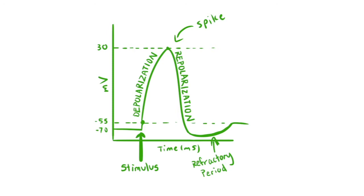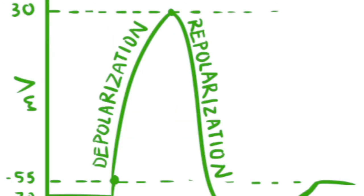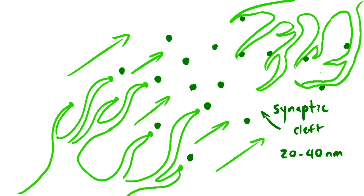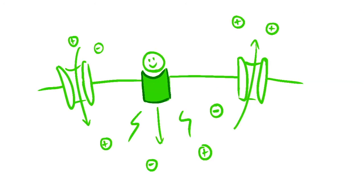Action potentials are also called spikes, for obvious reasons. An action potential triggers the release of neurotransmitters into the synaptic cleft, which is a 20 to 40 nanometer gap between the presynaptic axon terminal and the postsynaptic dendrite. After firing across the cleft, a neurotransmitter binds to a receptor on the postsynaptic side, and the receptor it binds to depends on which kind of neurotransmitter it is. Once the transmitter binds to a receptor, it triggers a signal transduction pathway that causes particular positive and negative ions to flow in or out of the postsynaptic neuron.